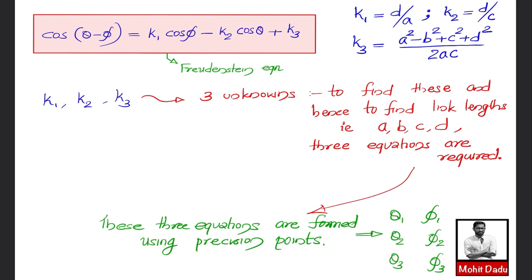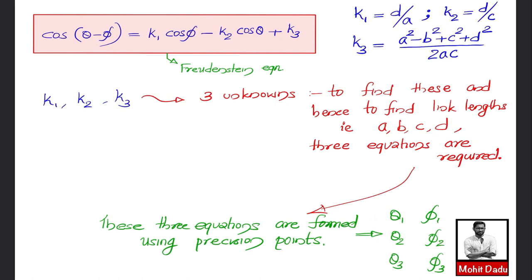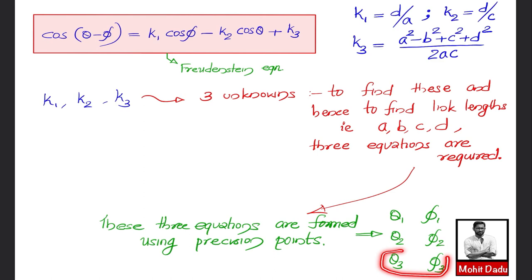Three precision points are used: at each precision point, the input angle θ and the corresponding output angle φ are known. So (θ1, φ1), (θ2, φ2), (θ3, φ3) give three equations. Solving them simultaneously yields K1, K2, K3, from which the proportional link lengths can be found.